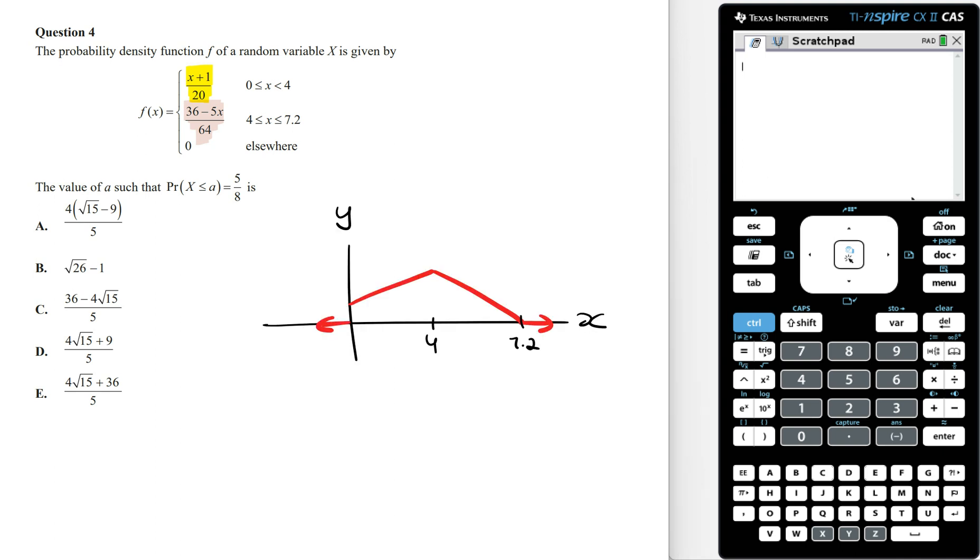To find the value of a we first need to check what is the area under the graph of f of x from where x is equal to 0 to where x is equal to 4. Now if this area is greater than 5 on 8 then this means the value of a is going to be less than 4.